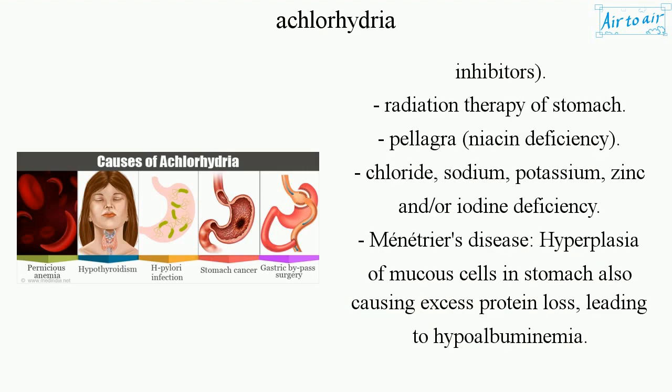proton pump inhibitors. Radiation therapy of the stomach. Pellagra — niacin deficiency. Chloride, sodium, potassium, zinc and/or iodine deficiency. Ménétrier's disease — hyperplasia of mucous cells in the stomach, also causing excess protein loss leading to hypoalbuminemia.